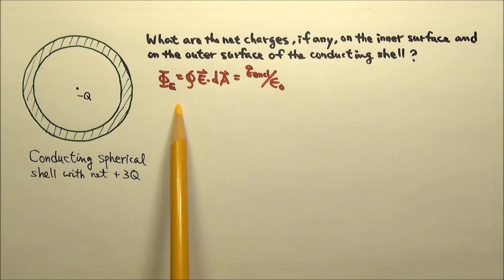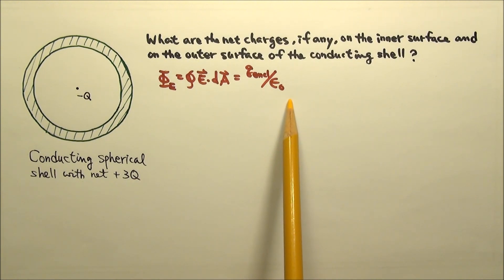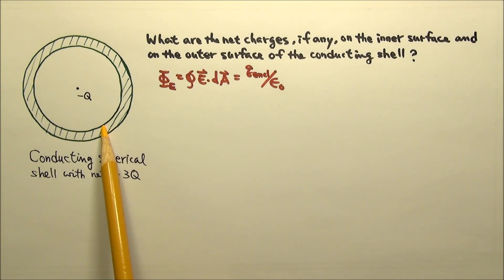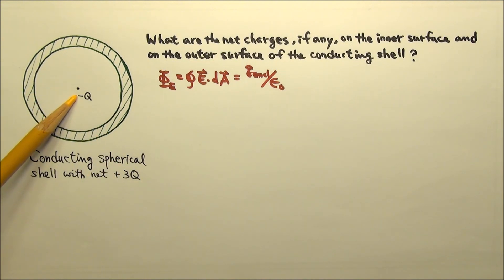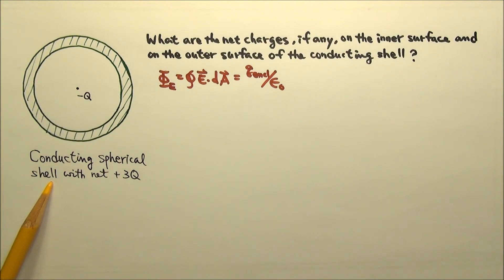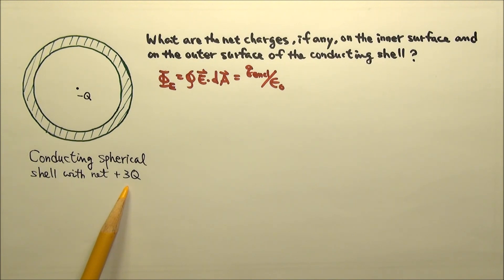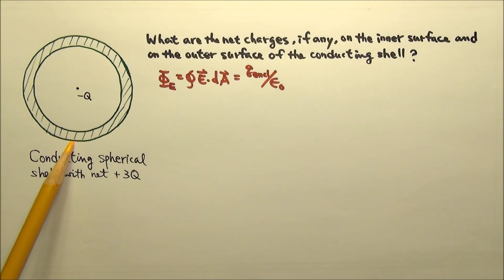One application of Gauss's law is for finding the net charge on the inner surface of a conductor. For example, we have a point charge negative q at the center of a conducting spherical shell. The shell has a net charge of positive 3q. Since net charges can only reside on the surface of a conductor, the net charges on the shell can only be on its inner and outer surfaces.